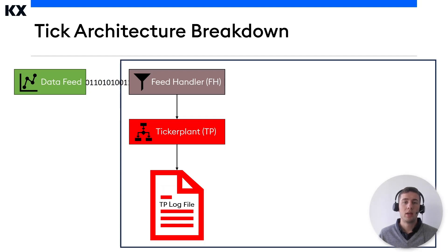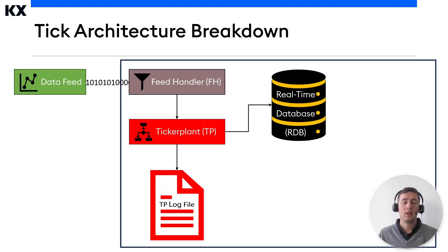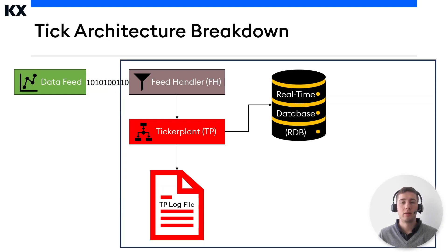The duration of this replay will depend on how many messages are in the log file, the disk read speed, and how quickly the process can replay the messages. This brings us onto the real-time database, or the RDB for short. This process holds all of the intraday data in memory to allow for fast, powerful queries. It's one of the simpler processes, as it subscribes to the ticker plant and keeps a record of the tables for that day. At startup, the RDB sends a message to the ticker plant and receives a reply containing the data schema, the location of the log file, and the number of lines to read from this log file. It then reads these lines, and then receives subsequent updates from the ticker plant itself, as they're published.